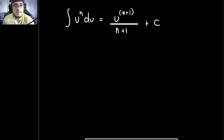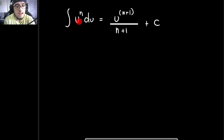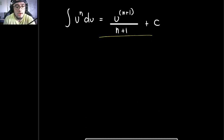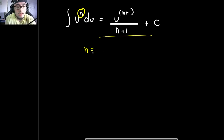Hello everyone. In the last video lecture, we discussed the power formula. The power formula states that the integral of u raised to the power of n times du is equal to u raised to n+1, divided by n+1, plus c. However, there is a limitation to this formula: you can only use it if the value of n, the exponent, is not equal to negative 1.